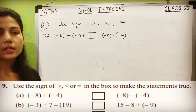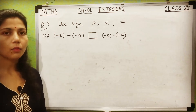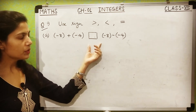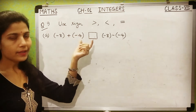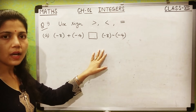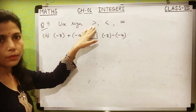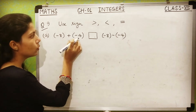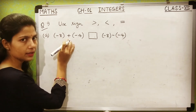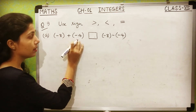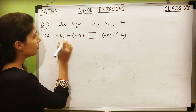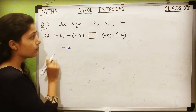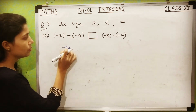Question number 9: Use the sign greater than, less than, or equals to in the box to make the statements true. You are given statements with a box between them, and you have to put the right sign. First, calculate the values on both sides, then decide which sign to use. Part A: (−8) + (−4) versus (−8) − (−4). Left side: both negative integers adding — 8 + 4 = 12, sign negative, giving minus 12.